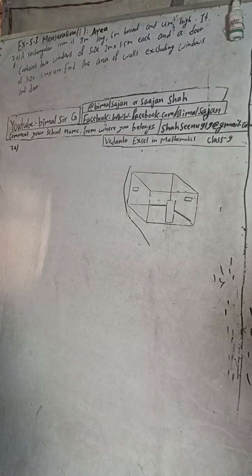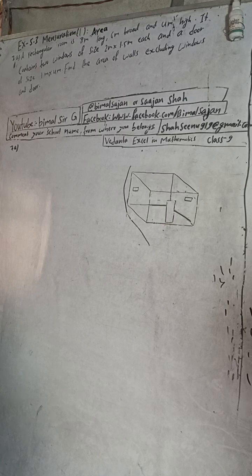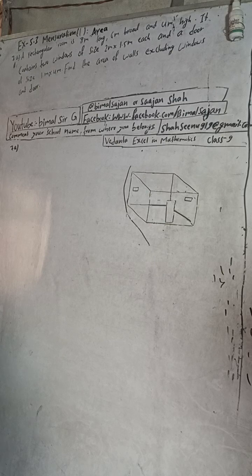Hi Class 9 and 10 students, welcome back to Bemal Sarji YouTube channel. This is question number 7a, Exercise 5.3 Mensuration First Part: Area, Vedant Excellent Mathematics Class 9. The question: a rectangular room is 8 meters long, 6 meters broad, and 4 meters high.